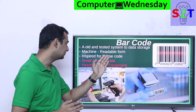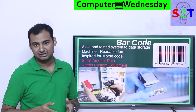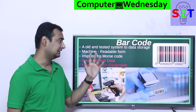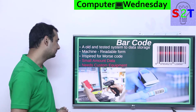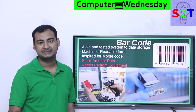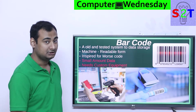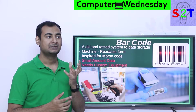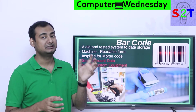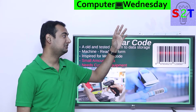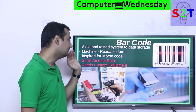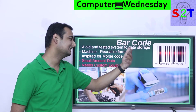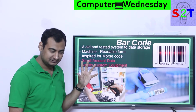Before we understand Quick Response Code, we have to understand its predecessor, which is barcode. It's an old and tested system and there is a very good chance you've already seen it in use - from grocery stores to medical stores, it's commonly used. It's what we call a data storage system, similar to a CD, DVD, or floppy. It's meant for computers - you can't read it directly; you have to send it through a machine, so it's called machine-readable form.